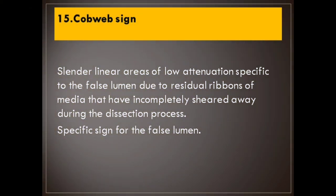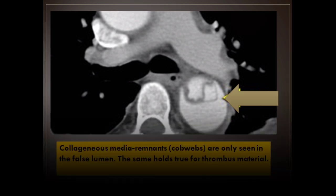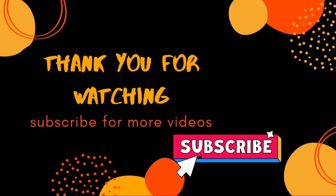Number 15: Cobweb sign. Slender linear areas of low attenuation specific to the false lumen, due to residual ribbons of media that have incompletely sheared away during the dissection process — a specific sign for the false lumen. Collagenous media remnants (cobwebs) are only seen in the false lumen; the same holds true for thrombus material. This is the end of our lecture. Thank you for watching; subscribe for more videos.